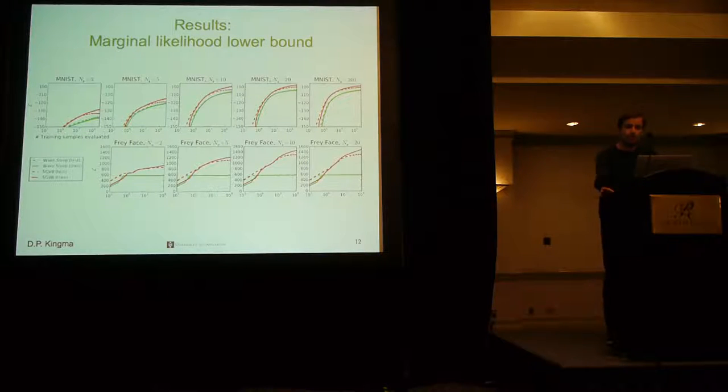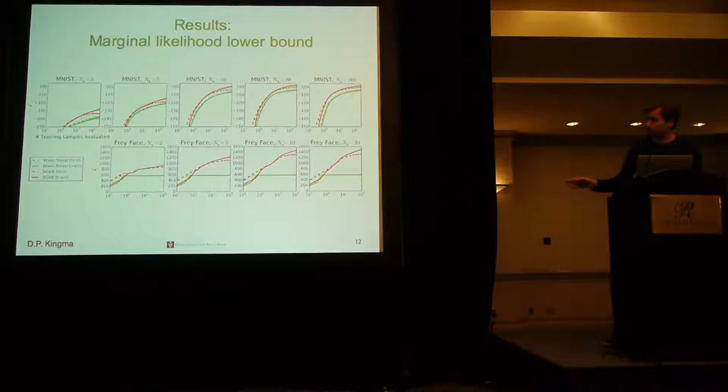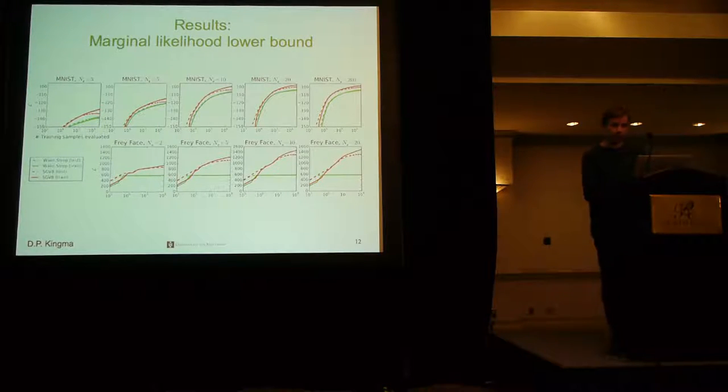We performed a couple of experiments where we compared with, for the MNIST and Frey Face datasets, we used a variety in order to latent space here, ranging from 2D to 200. In all settings, our methods converge faster and to a better optimum. These were experiments where we compared in terms of the lower bound of the marginal likelihood.